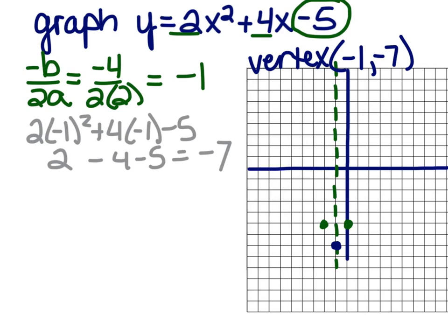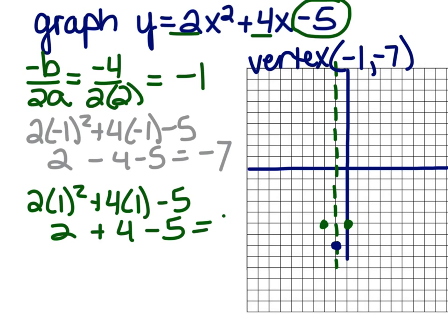So I'm going to pick 1. Plug it in. I get 2 times 1 squared plus 4 times 1 minus 5. Gives me 2 plus 4 minus 5, which is 1. So I have a point at 1, 1, and I can mirror it across my axis of symmetry. So there are your 5 required points.